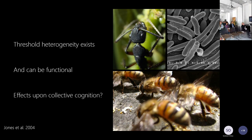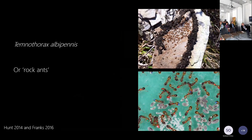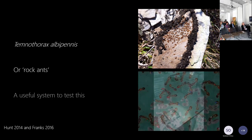So what I'm interested in — and now we get to some content — is: what is the effect of heterogeneity in threshold responses on collective cognition? To describe this, I'm going to talk about the model system of Temnothorax albipennis, also known as rock ants because they live in rock crevices and are actually a native species of the UK.